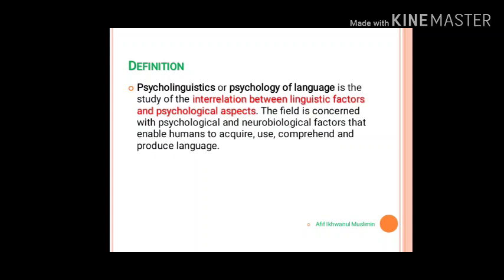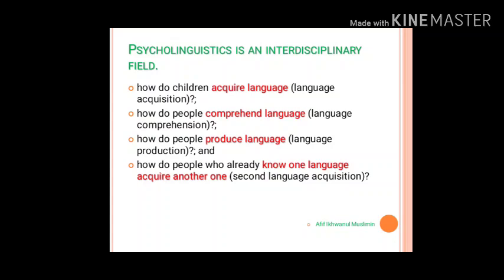There is a correlation between the conditions of the brain and human language production. The field is concerned with psychological and neurobiological factors that enable humans to acquire, use, comprehend, and produce language. Psycholinguistics is not an individual discipline but an interdisciplinary field, because to understand how someone acquires language we must also consider social factors, social linguistics, language skills, and discourse analysis.